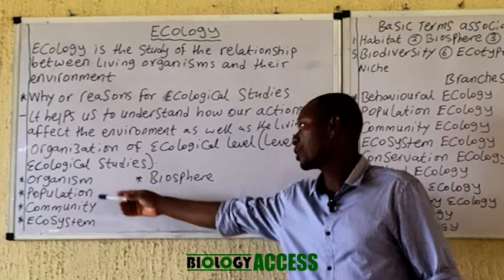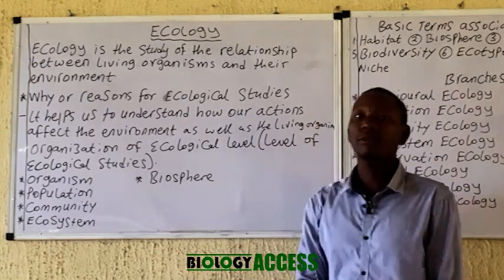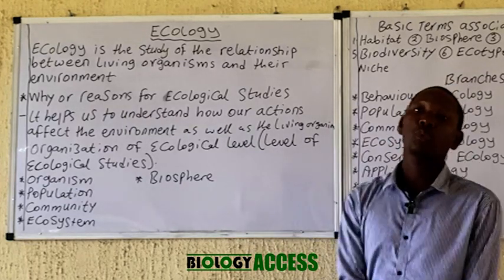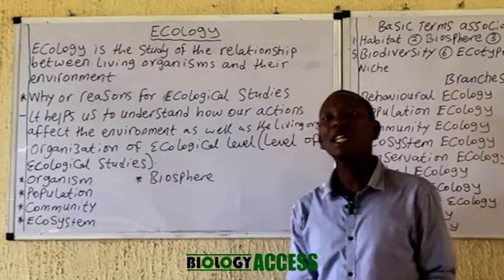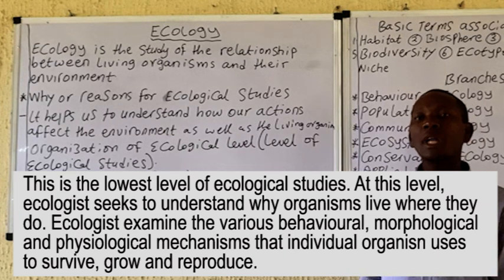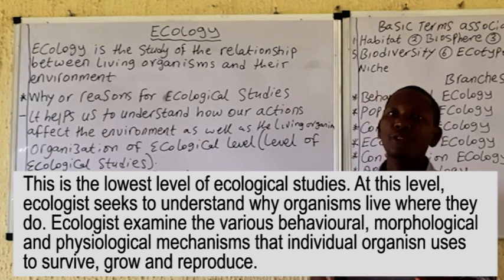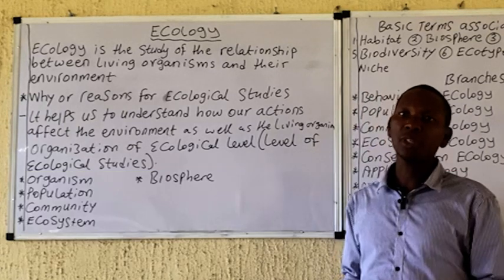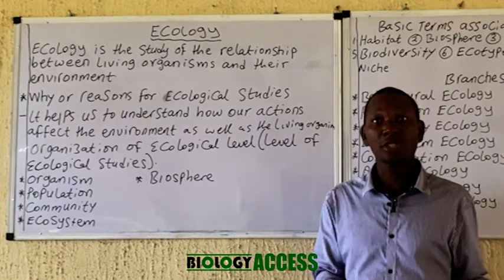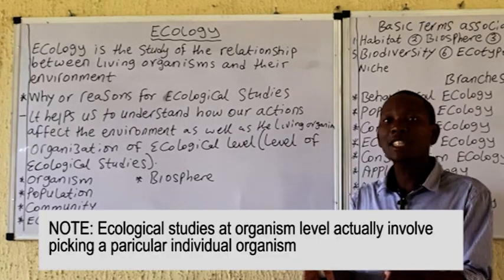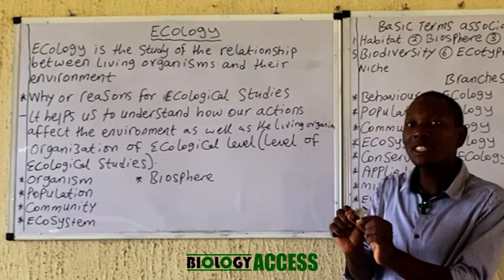One of the levels is actually the organismal level. At this level, you can decide to study a particular organism — studying the behavior, the mating pattern, the physiology, the morphology of that particular organism. For example, when watching National Geographic, a scientist studied a particular species of animal from birth to death. That is actually a study on the organismal level.